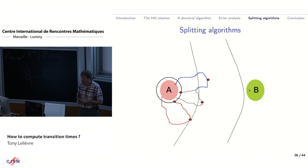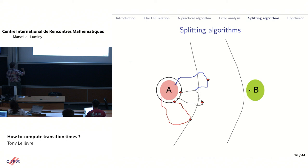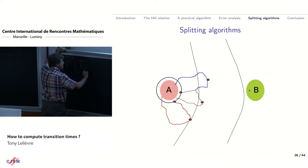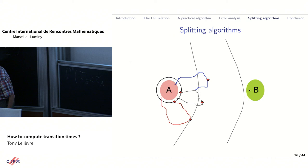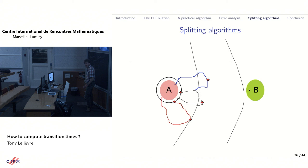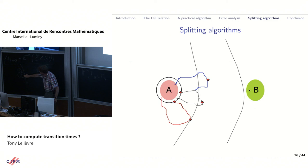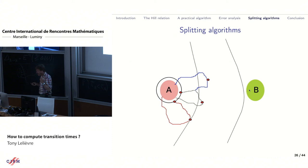Five minutes to present the idea of the algorithm. The question is: given some probability measure nu over the boundary of A — typically nu_Q transported to a probability over sigma — what is the probability that you reach B before A? This is a very small probability, and the question is how to estimate it.